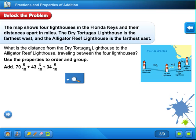What is the distance from the Dry Tortugas Lighthouse to the Alligator Reef Lighthouse traveling between the four lighthouses? So we want to know what the distance is from the Dry Tortugas to the Alligator Reef Lighthouse. And we're going to be traveling between the four lighthouses. They want to go from this one to this one to this one to that one. So that would be a big difference. Make sure you're reading exactly what the question is asking. Use the properties to order and group. So we're going to add 70 and 5 tenths plus 43 and 6 tenths plus 34 and 5 tenths. Let's get started.